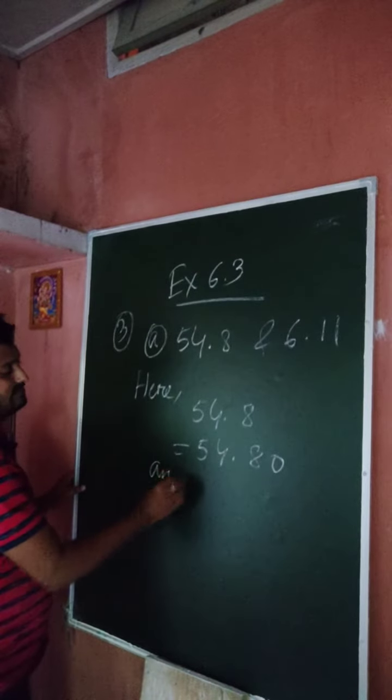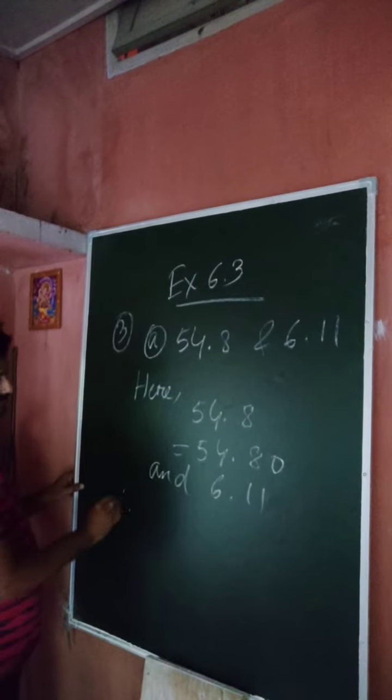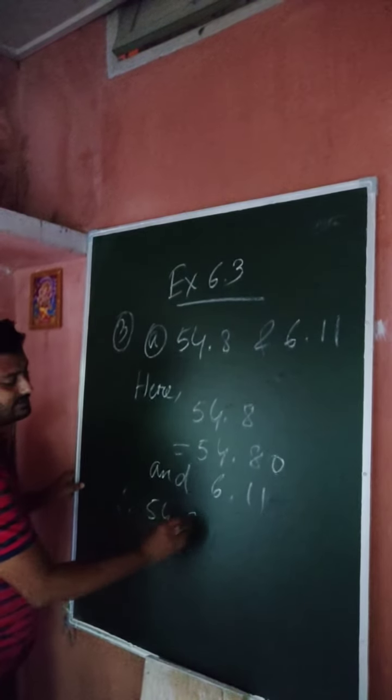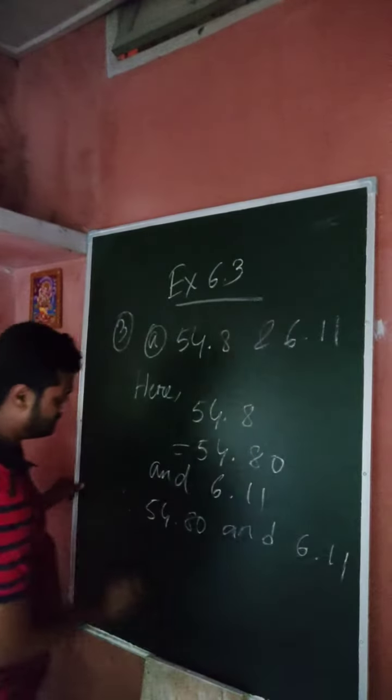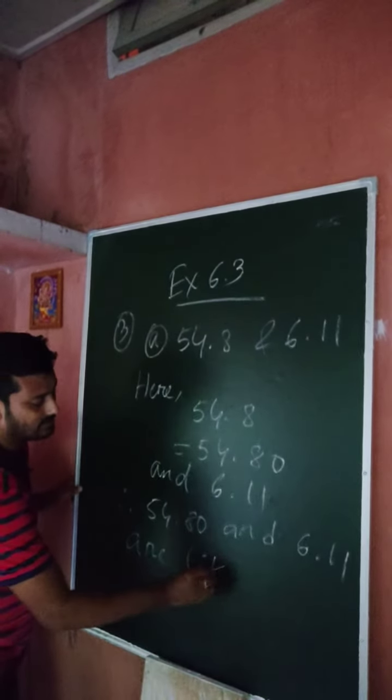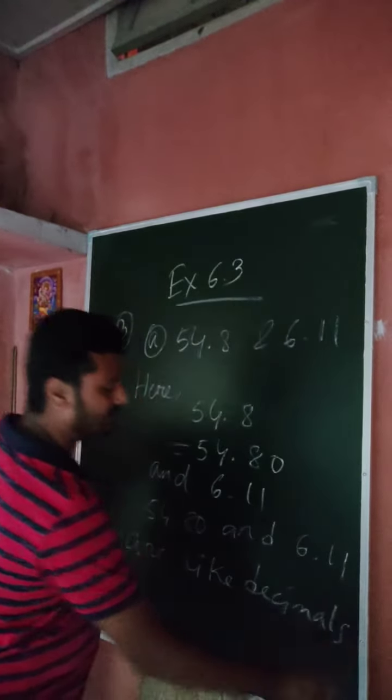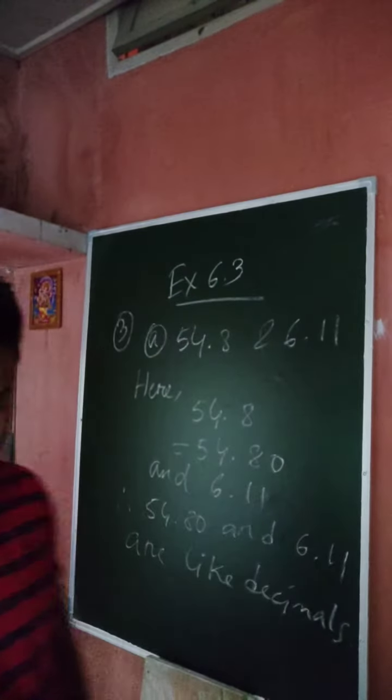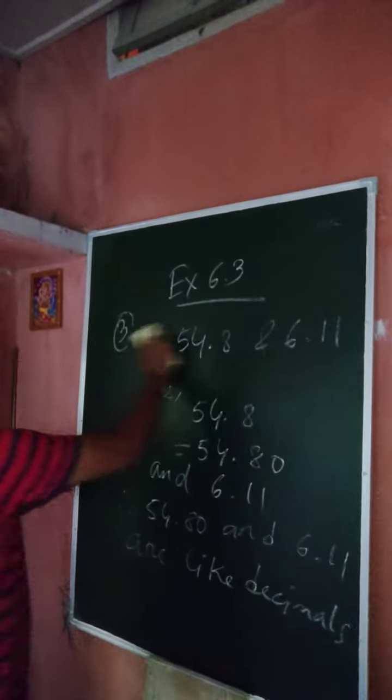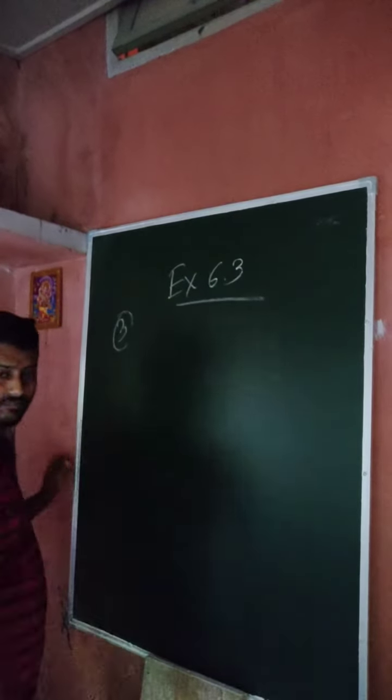And now, 6.11. Okay. So, therefore, 54.80 and 6.11 are like decimals. Okay. So, in this case, you can convert unlike decimals into like decimals.